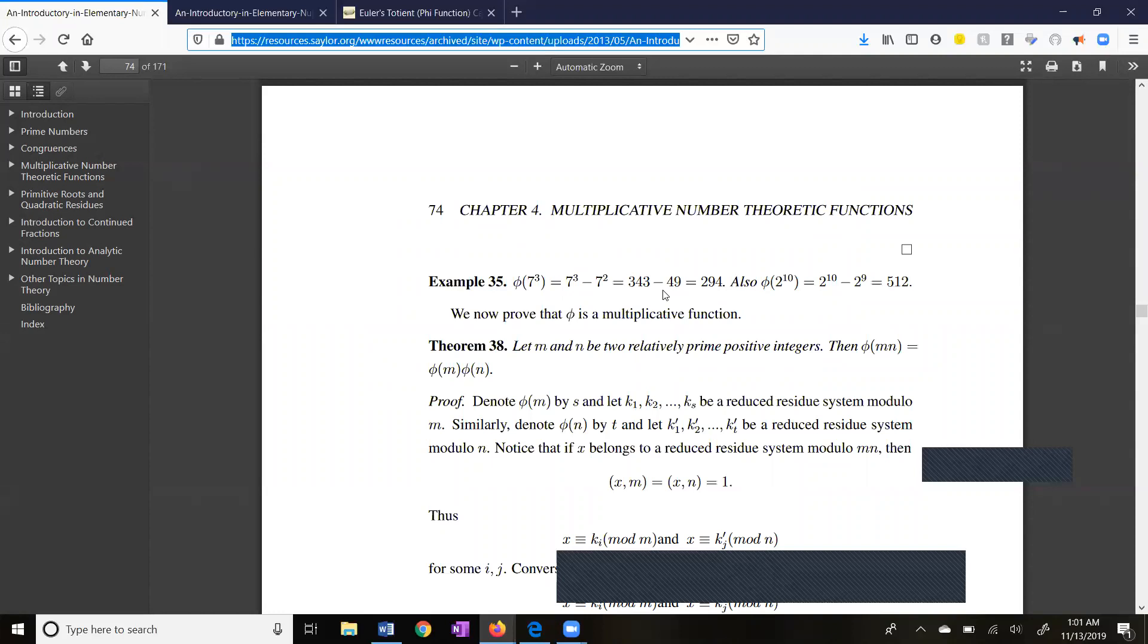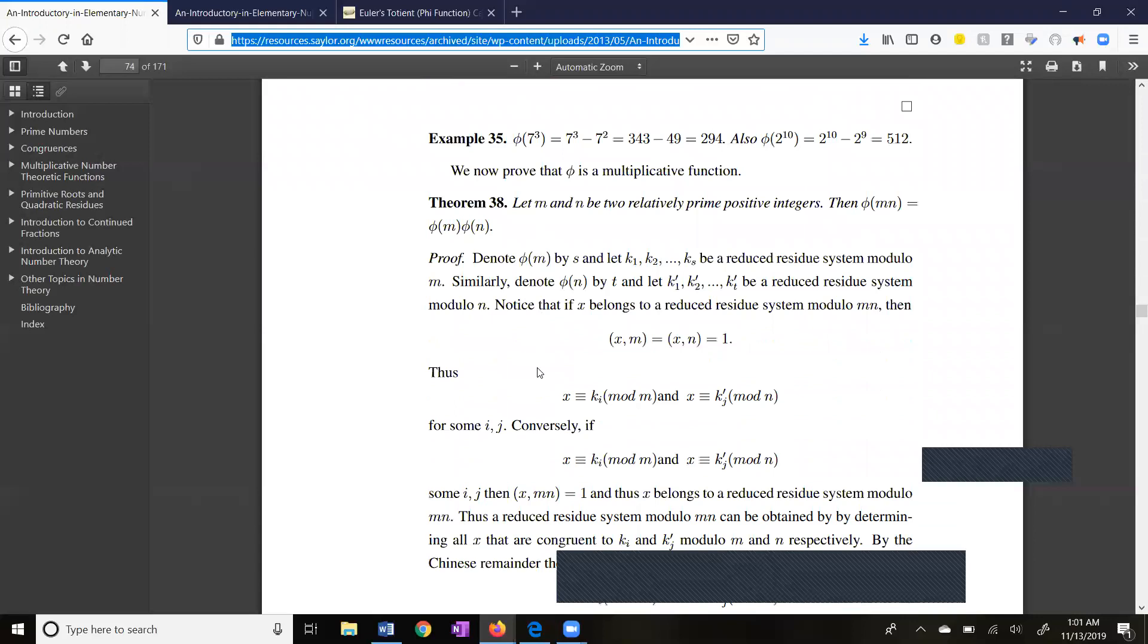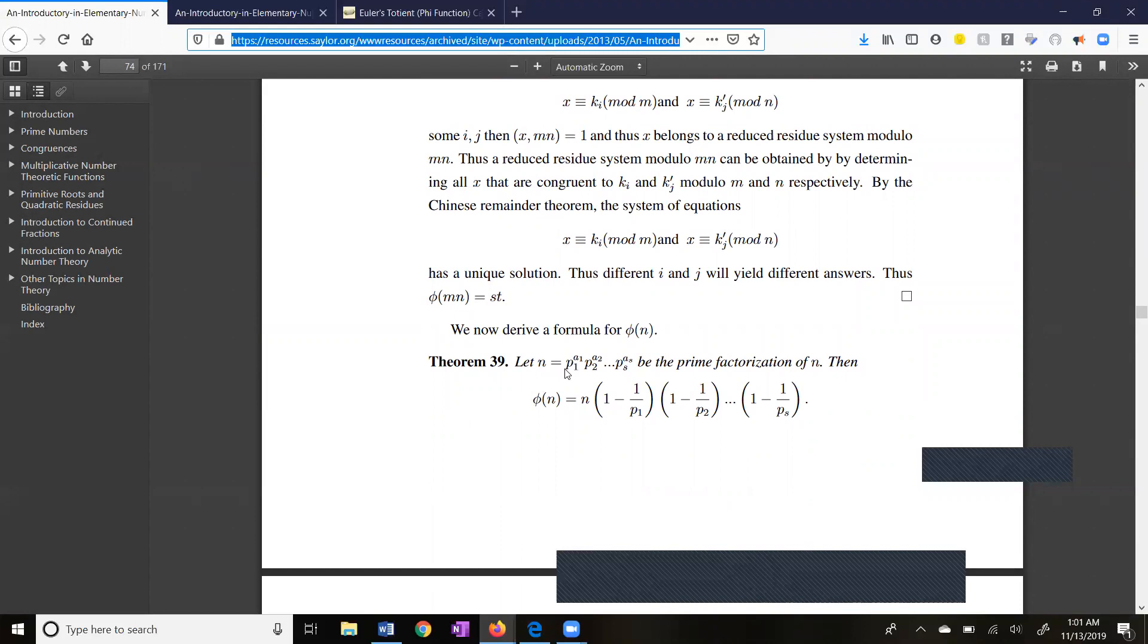Here is the statement that phi is multiplicative. And here is a very interesting theorem. If we have the prime factorization of a number, here is an explicit formula for calculating phi. You take the number n times 1 minus 1 over p1 times 1 minus 1 over p2 up through 1 minus 1 over p divided by s. So each of these quantities here is going to be a fraction. For example, maybe 1 minus 1 third would be 2 thirds. 1 minus 1 seventh would be 6 sevenths. Interesting. So we don't really even need our table because we can always get a prime factorization and so we're going to be able to use theorem 39.